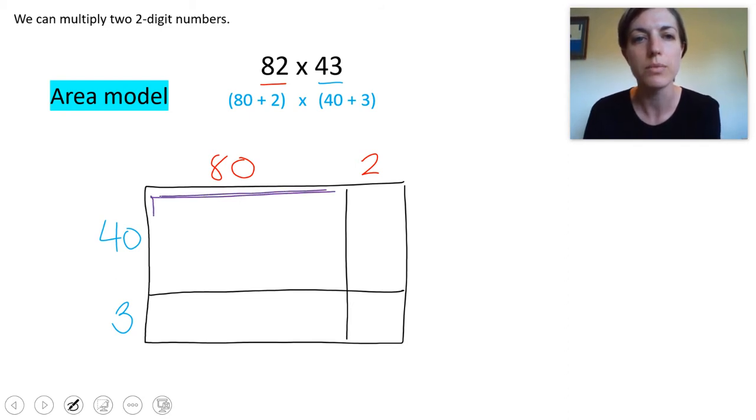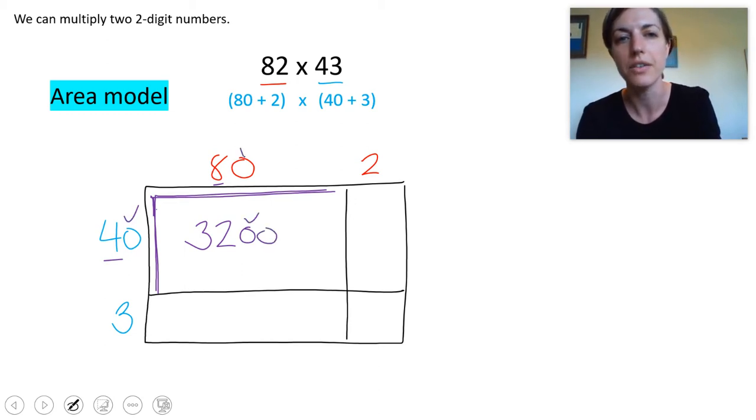Now we're going to find the area of each section by multiplying the length and width of each smaller section. So to find this big one we're going to do 80 times 40. And I know that 8 times 4 is 32. So 8 tens times 4 tens is 32 hundreds. Don't forget to check your zeros and make sure that you have enough. To find this bottom section we do 80 times 3. Well 8 times 3 is 24. So 8 tens times 3 is 24 tens. Check your zeros.